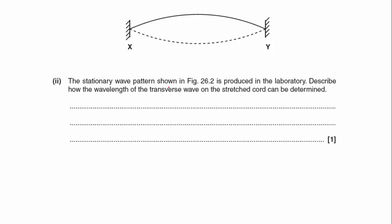Part two: the stationary wave pattern shown in figure 26.2 is produced in the laboratory. Describe how the wavelength of the transverse wave on the stretched cord can be determined. Well, if we look here, this is a node, we've got a node here, and this is half a wave because if I was then going to carry on drawing it, there would be my full wave. So the wavelength would be double the distance between X and Y.